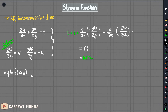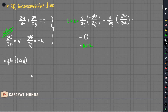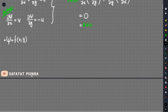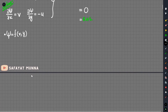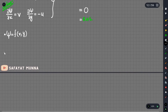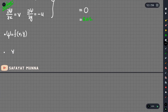We will see the properties of the stream function. In this case, we will use the Laplace equation. We will see the incompressible flow condition and say that the curl (cross product) is zero.